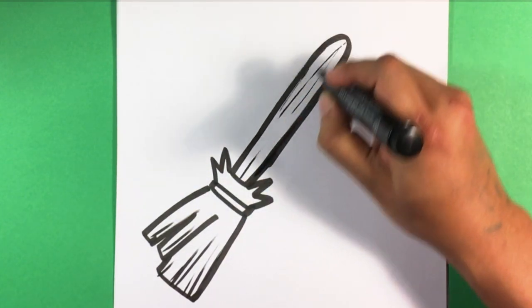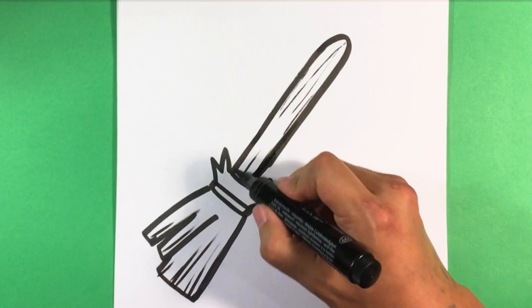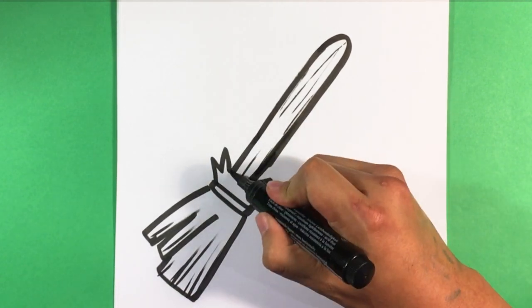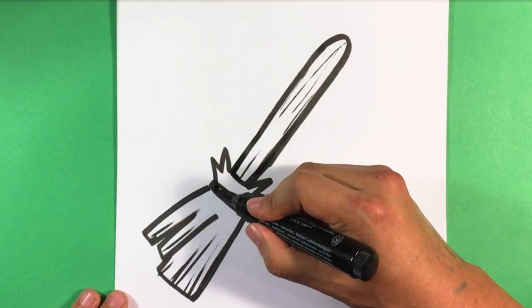And if you really want, you can draw on this as well, because it's a wooden broom. So, that's pretty much it. It's extremely simple.